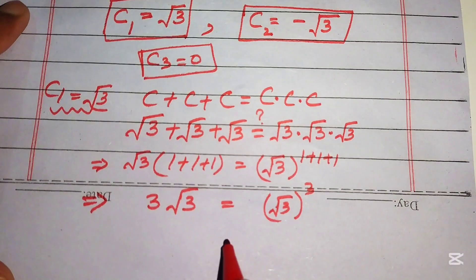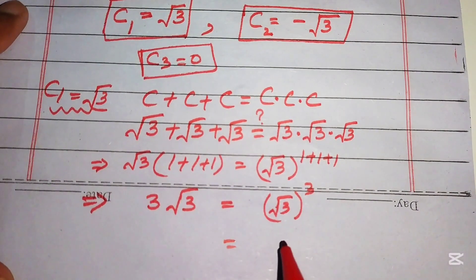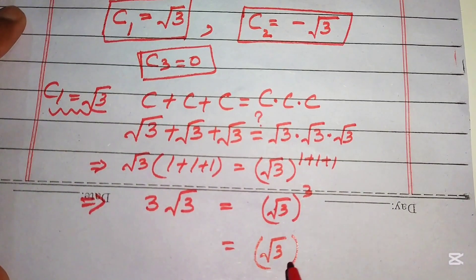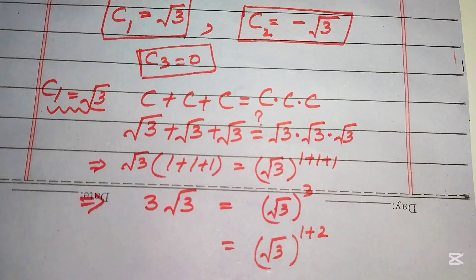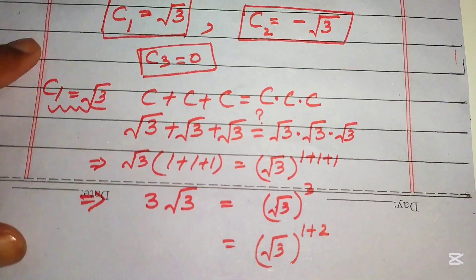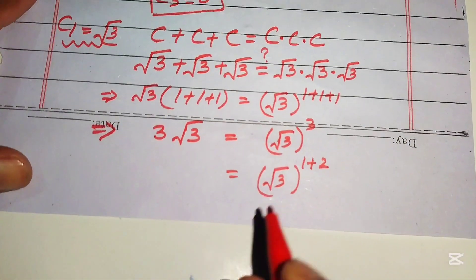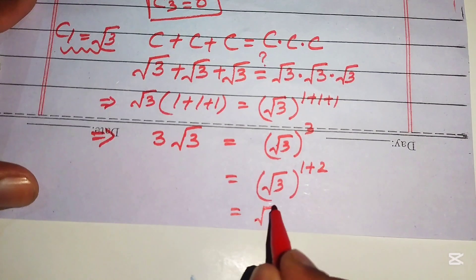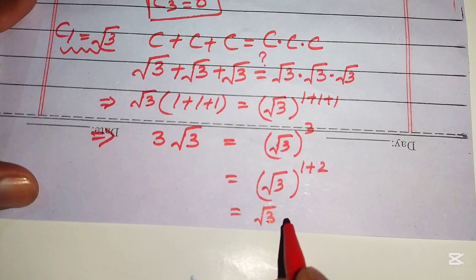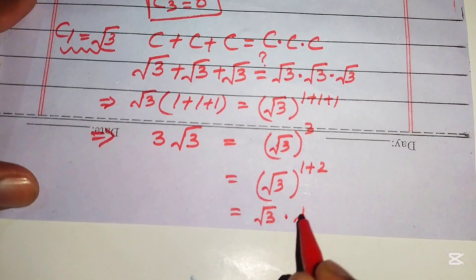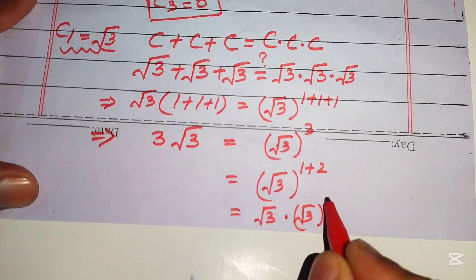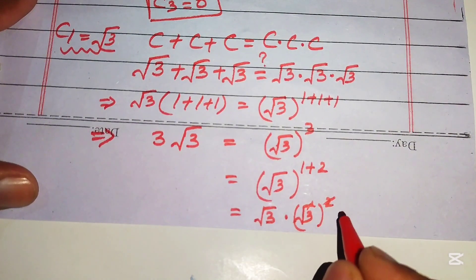We break the exponent three as one plus two, then further split to get square root of three times square root of three squared.